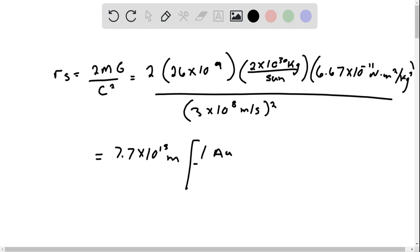So we're going to do 1 AU divided by 1.49598 times 10 to the 11 meters, and this is going to give us 515 AU.